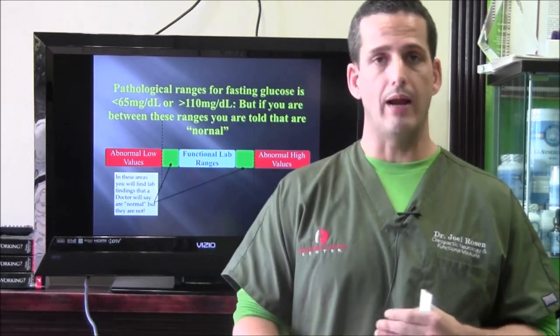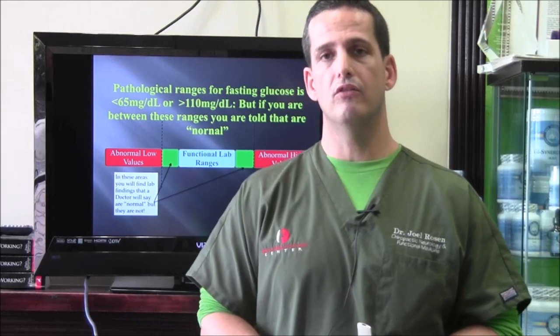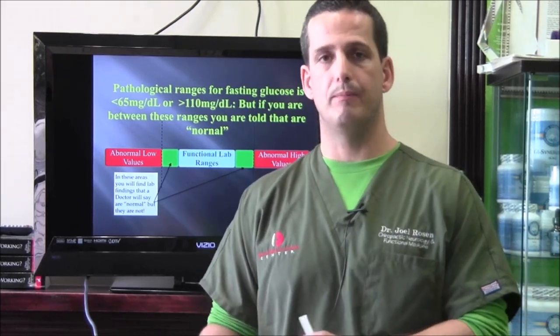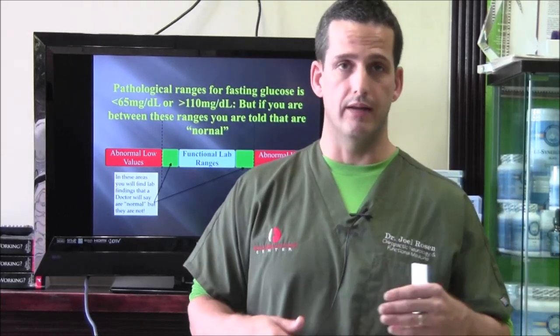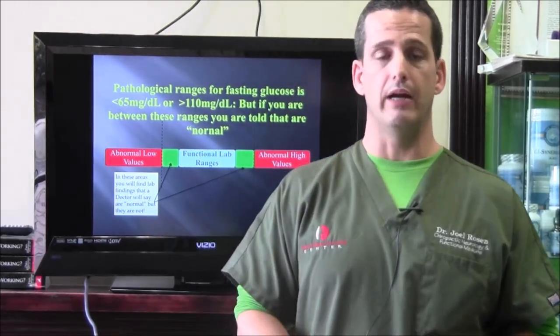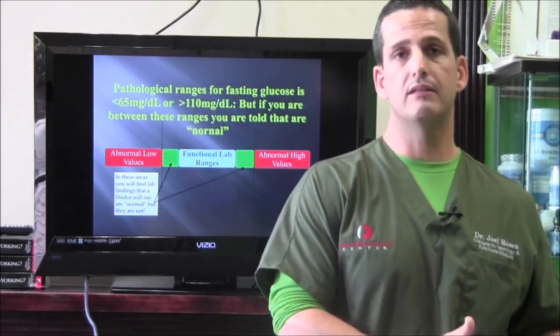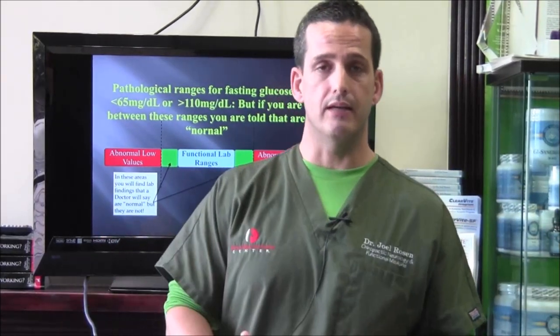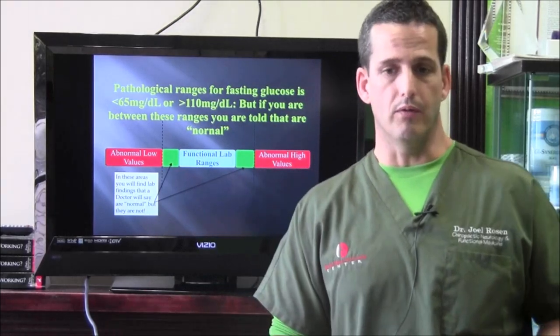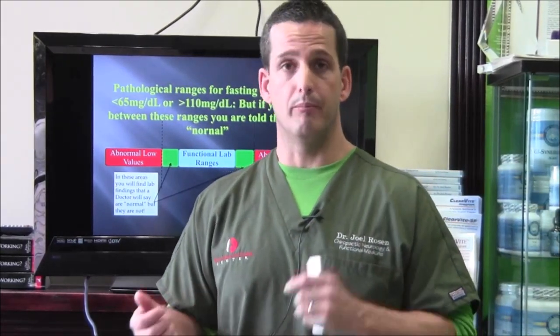Or you're inside those lab ranges and told you're normal even though you feel crappy. The functional ranges represent what's average for a healthy population. For blood sugar, the average lab range depending on the lab is 65 to 110. So if you're 66 or 109, you're told you're normal; if you're 111 or 64, you're told you're not normal. There's a big problem with that because symptoms develop before those thresholds are even crossed.